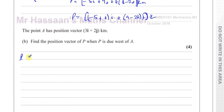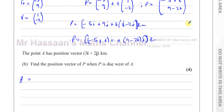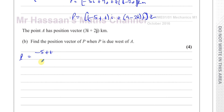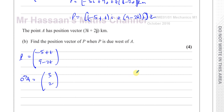I'm going to write p in column vector form as (minus 5 plus t) for i and (9 minus 2t) for j. The position vector of A is (3, 2). Now, when P is due west of A — let me draw a quick diagram. North, east, south, west. Due west is this direction. When P is due west of A, it's basically in line with A horizontally.